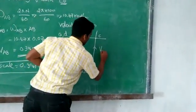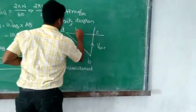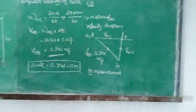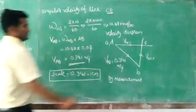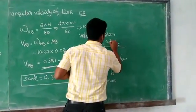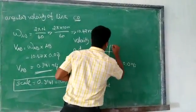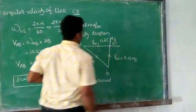So velocity of DC with respect to D equals velocity of DC. By measurement we calculate 0.25 or 0.13 meter per second.